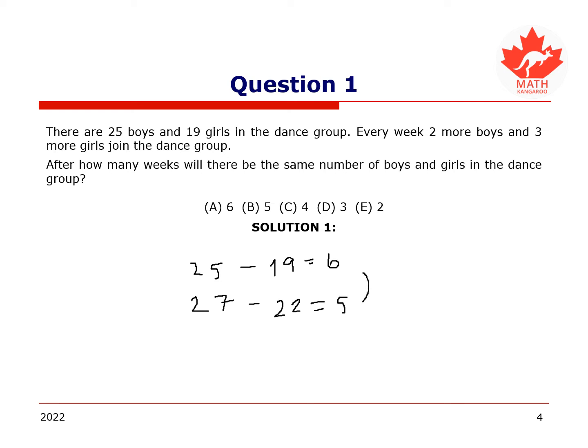Therefore, the difference between the boys and the girls each week goes down by 1. To compensate for the original difference of 6 more boys, 6 weeks are therefore needed, or the number of boys and girls will be the same after 6 weeks.